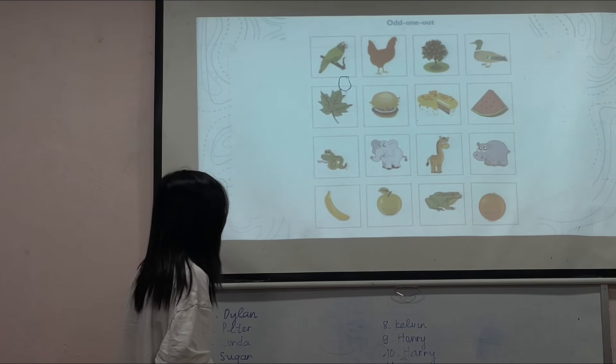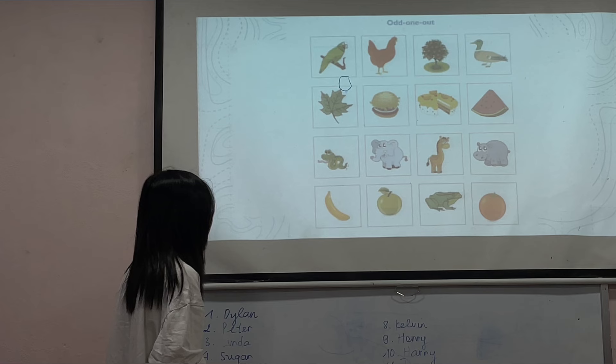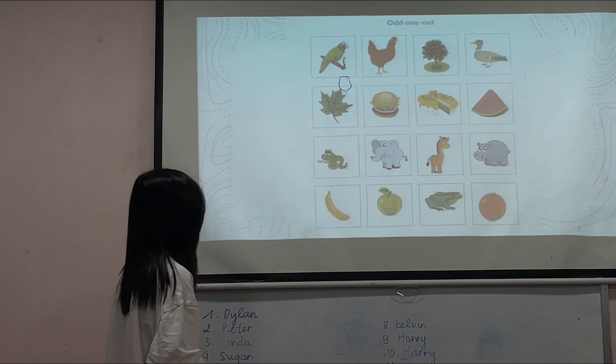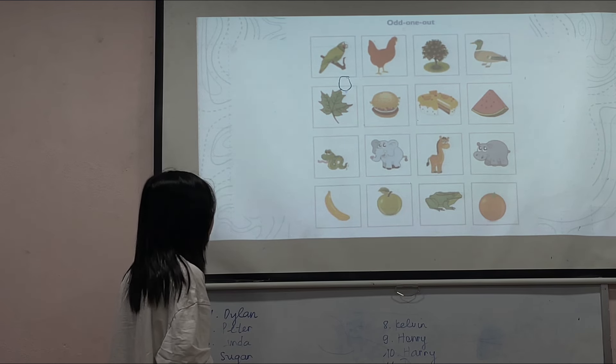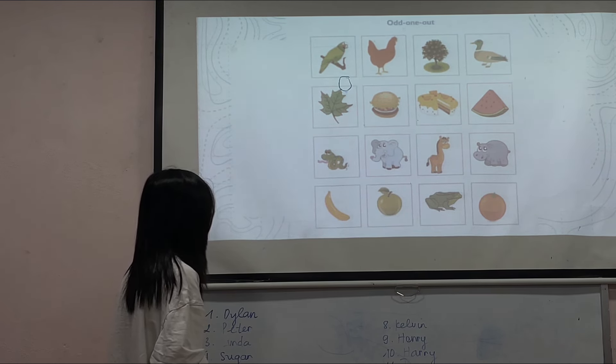Picture three is the odd one out because pictures one, two, and four are vegetables.